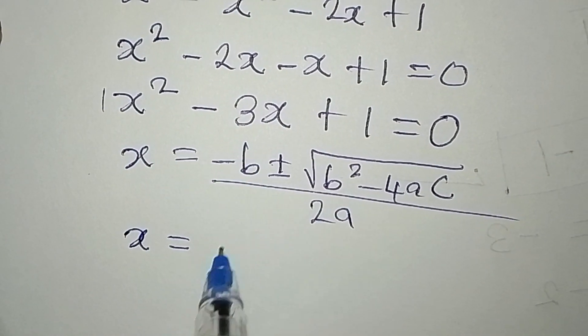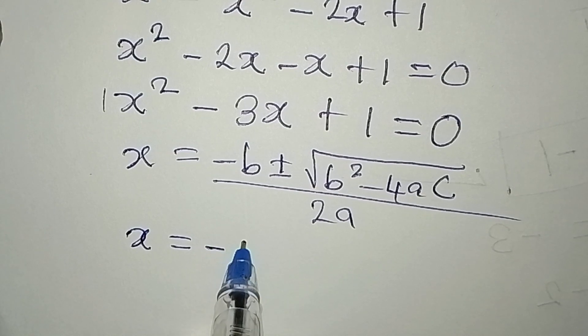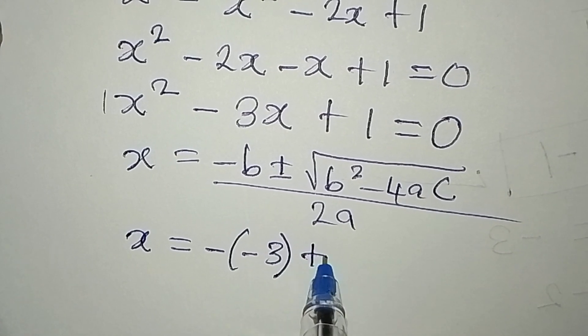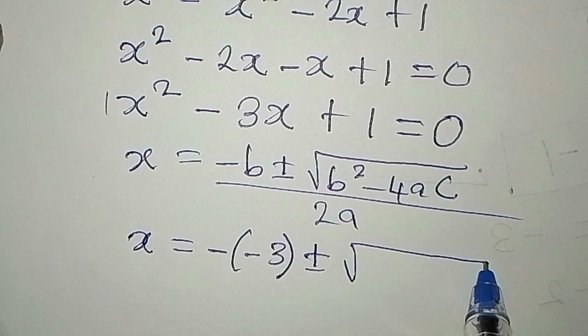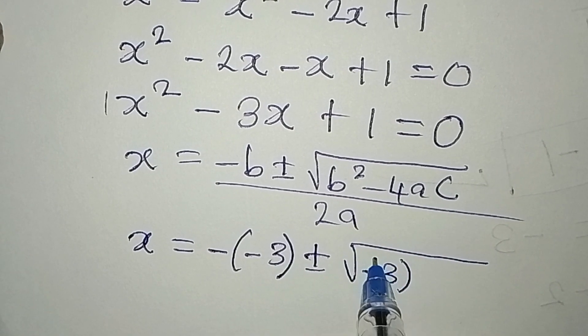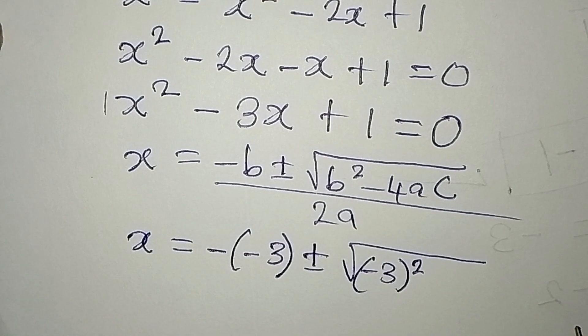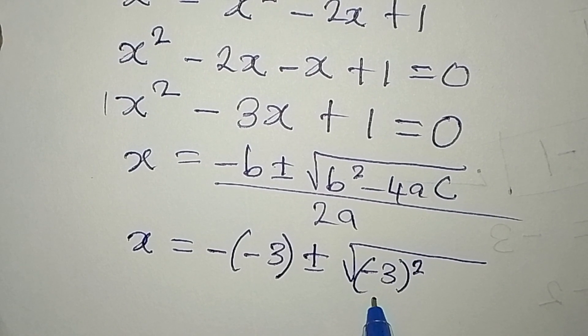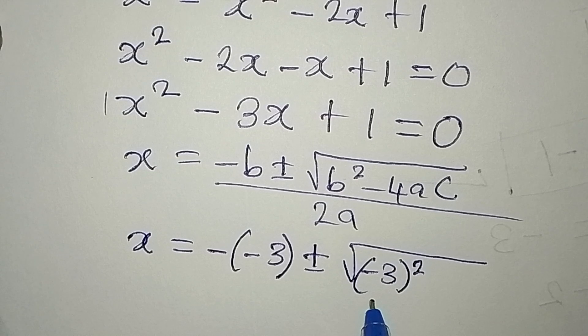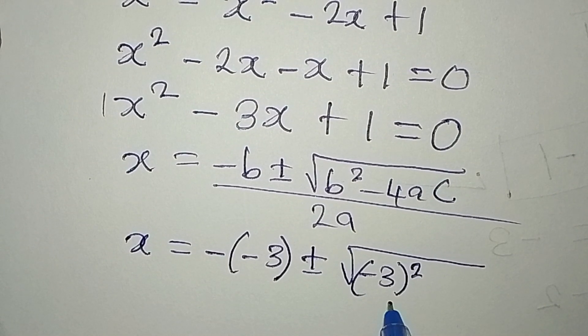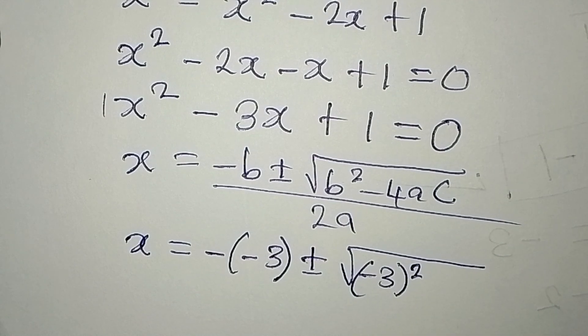So x now will be equal to, in place of minus b, I will write minus, minus 3. Then plus or minus. Then I have b squared, which will be minus 3 to the power of 2. Some students will fail to put this in brackets. And if you fail to do that, you will have a wrong answer. Especially if you press your calculator. Because minus 3 squared in your calculator will give you negative 9.